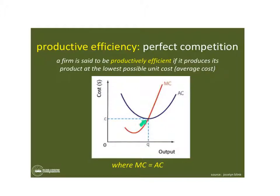This is also the break-even point, where the average total cost curve and the marginal cost curve intersect. This always happens at the lowest possible point of the average cost curve, where the marginal cost curve intersects. So this quantity right here, if the firm is operating where MC equals AC, the firm is productively efficient.